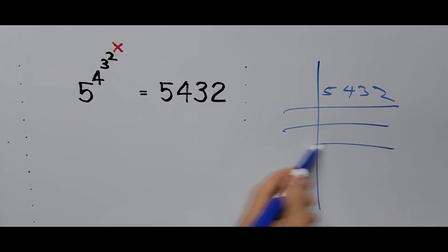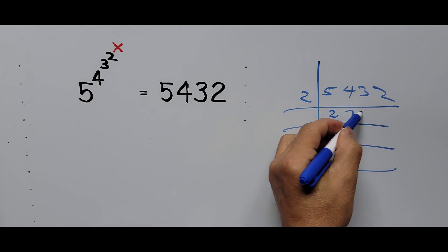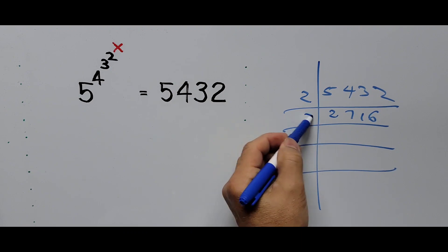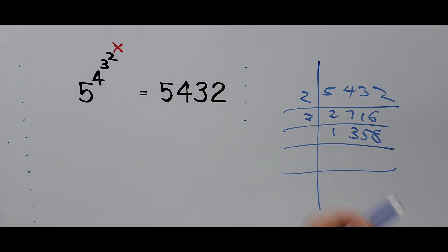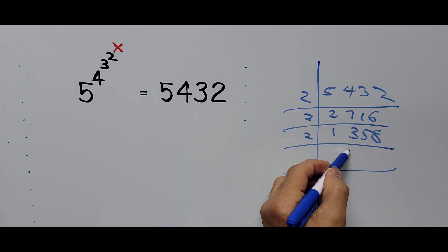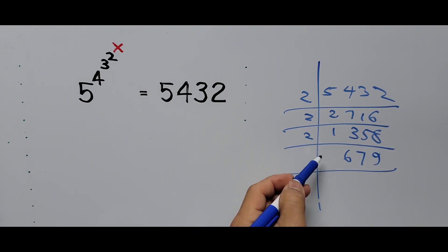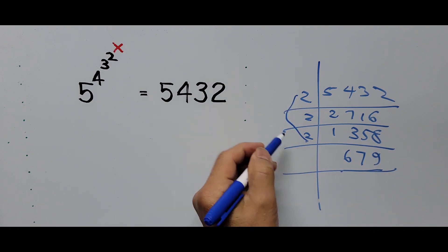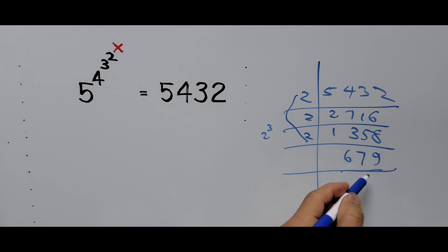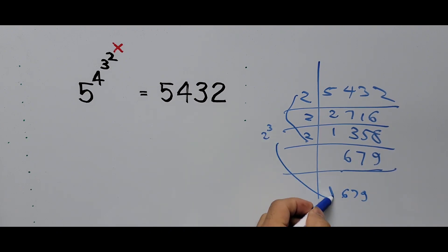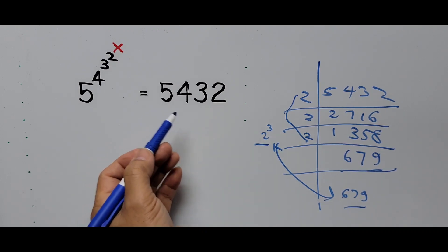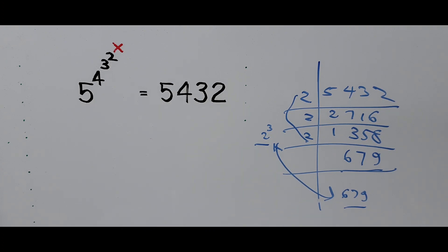Dividing 5,432 by 2 gives 2,716; dividing again gives 1,358; again gives 679. Since 679 is not divisible by any number except itself and 1, we get 5,432 = 2³ × 679. There is no way to express 5,432 in exponential form with a base of 5, so we cannot use the rules of exponents to find x.